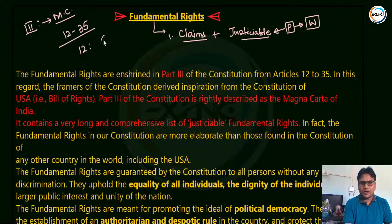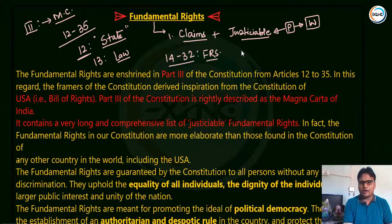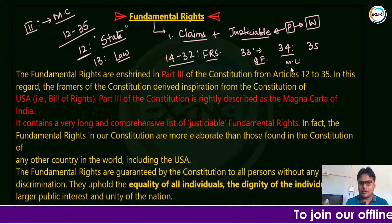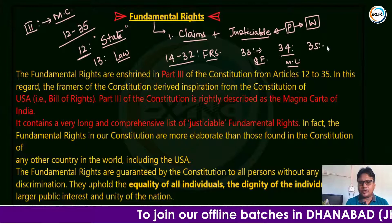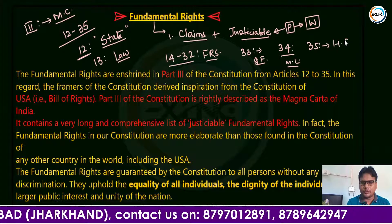Article 12 defines the term 'state' for Part Three. Article 13 defines the concept of 'law' for Part Three. Articles 14 to 32 actually talk about the fundamental rights themselves. Article 33 talks about the limitations and scope of operations of fundamental rights in case of paramilitary or armed forces. Article 34 deals with the limitations of fundamental rights during the operations of military rule or martial law. Article 35 talks about the manner of execution of these rights.